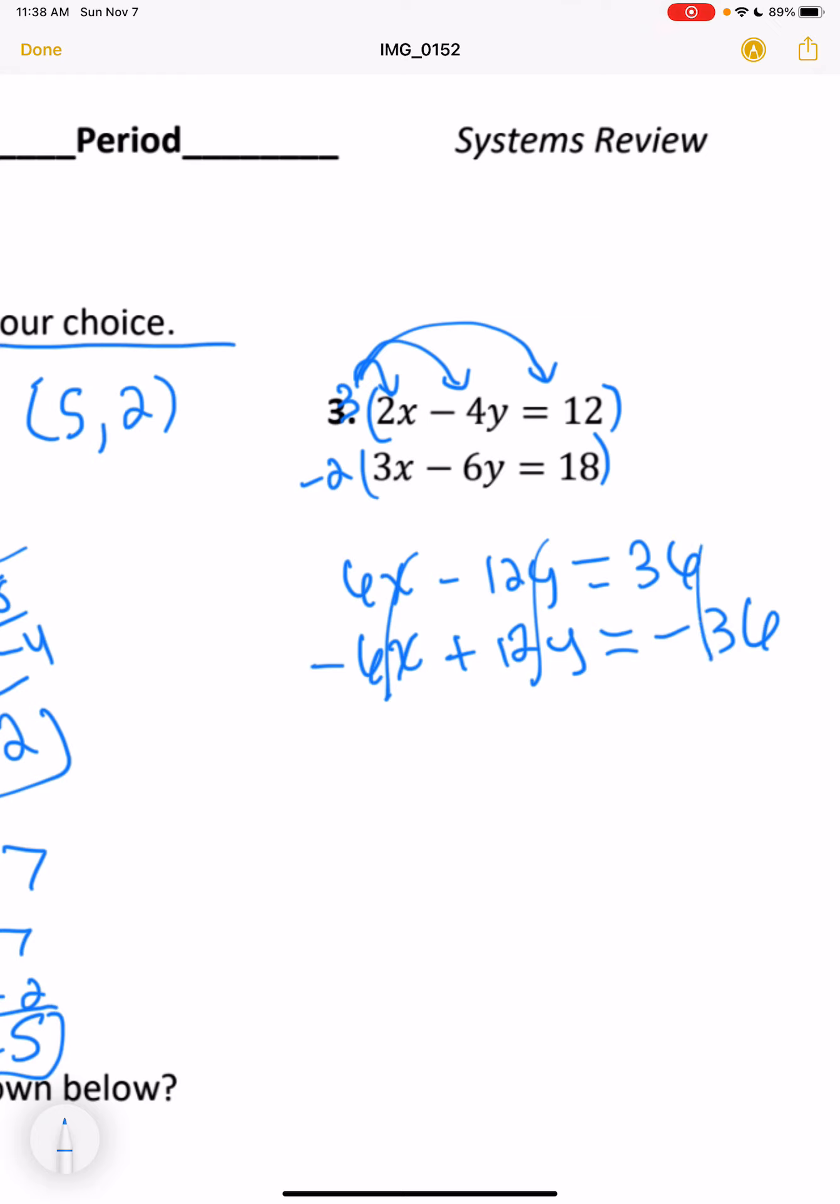And then we did end up with a strange situation that is about to happen. Every single thing here cancels out. So we are left with 0 equals 0.